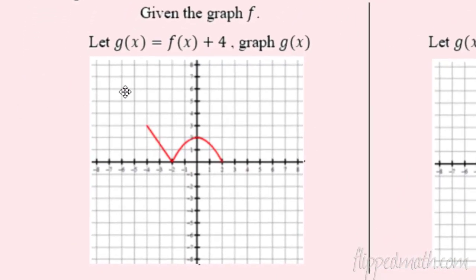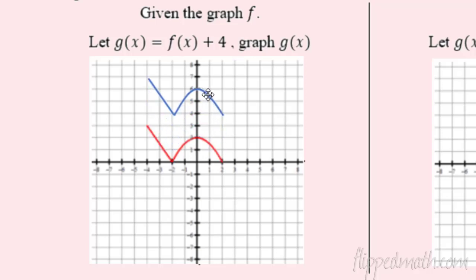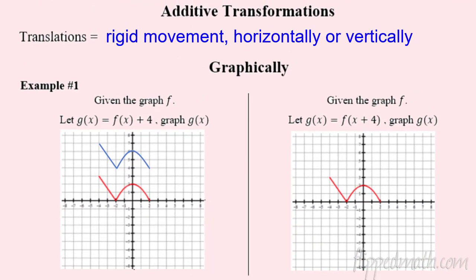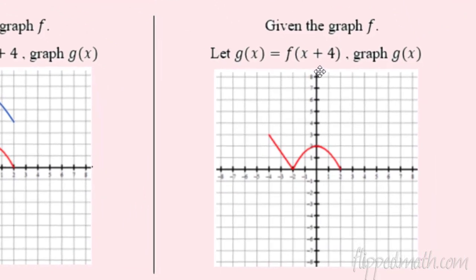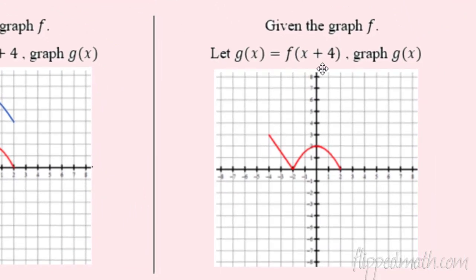Let's look at an example. If I make g(x) from f(x) plus 4, I'm going to take this shape and the plus 4 at the end just moves it up one, two, three, four. So it just slid right up — that's a translation, a vertical translation shifting it up four.